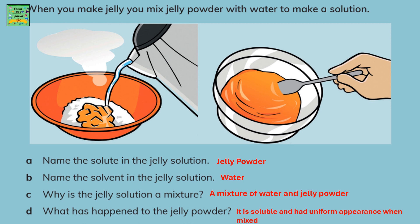What has happened to the jelly powder? It is soluble and had uniform appearance when it's mixed. It forms a homogeneous mixture.